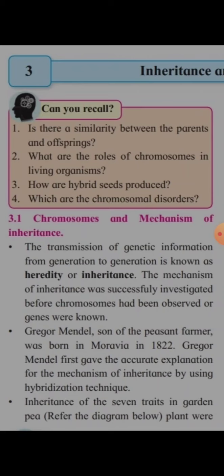The genetic information is transmitted from generation to generation, and this is called heredity or inheritance. The mechanism of inheritance was successfully investigated before the chromosomes had been observed or the genes were known.